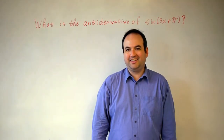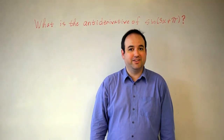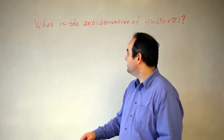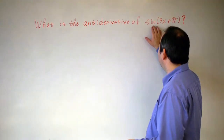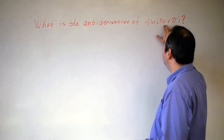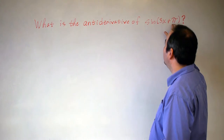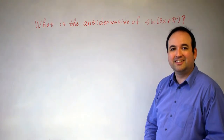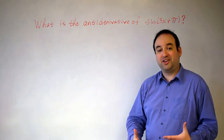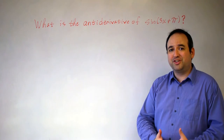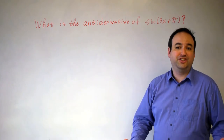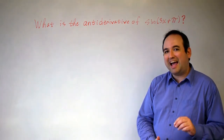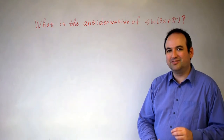Suppose that we're trying to find the antiderivative of a function of a line. In other words, we've got a function evaluated at a constant times x plus another constant. It turns out that you can use substitution, also known as change of variables, in order to do this, but there's a faster way that's more effective.